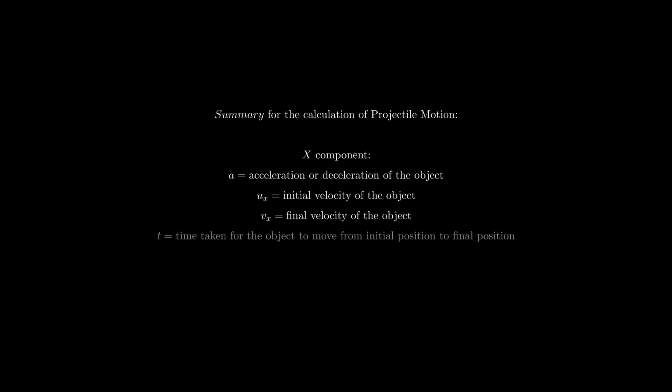Here is the summary for the calculation of projectile motion for the X component. A represents the acceleration or deceleration of the object. Ux represents the initial velocity, Vx represents the final velocity, T represents the time taken from initial to final position, and S represents the horizontal displacement.